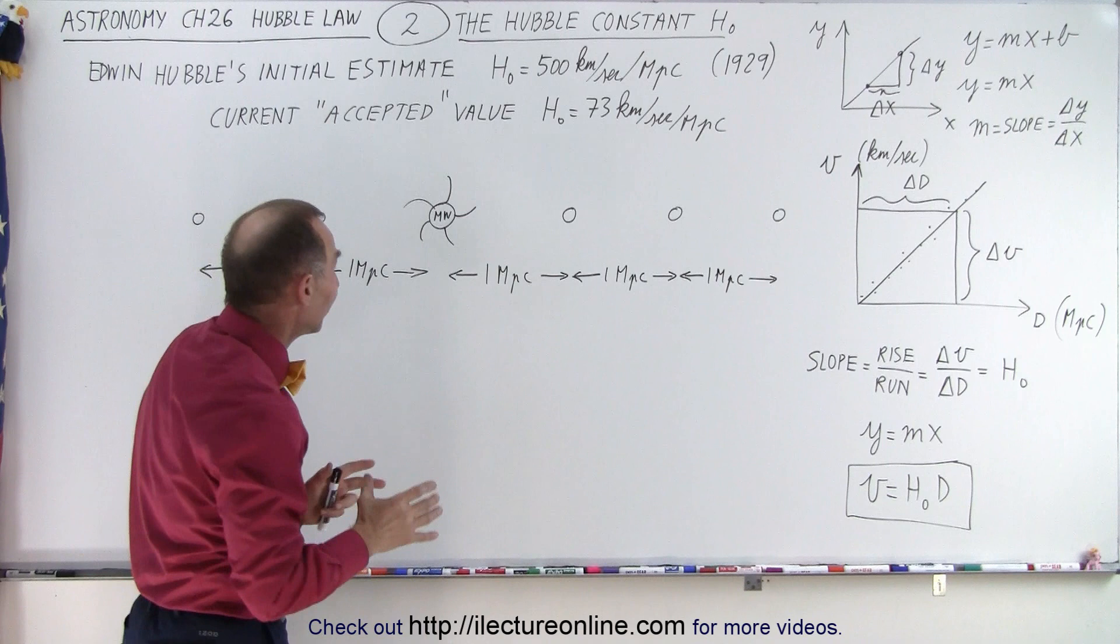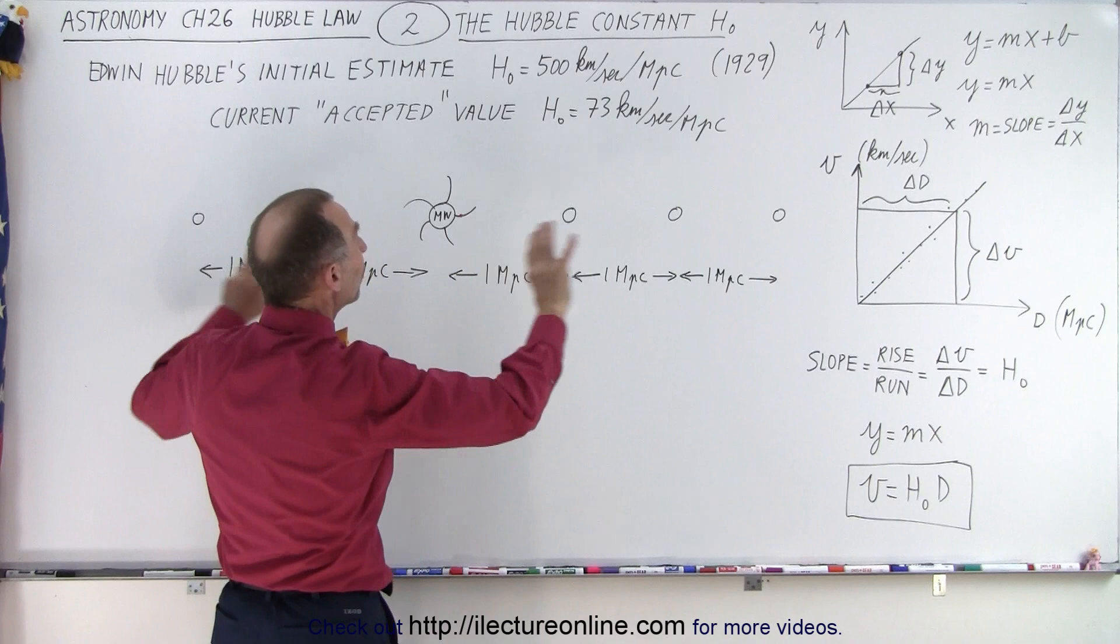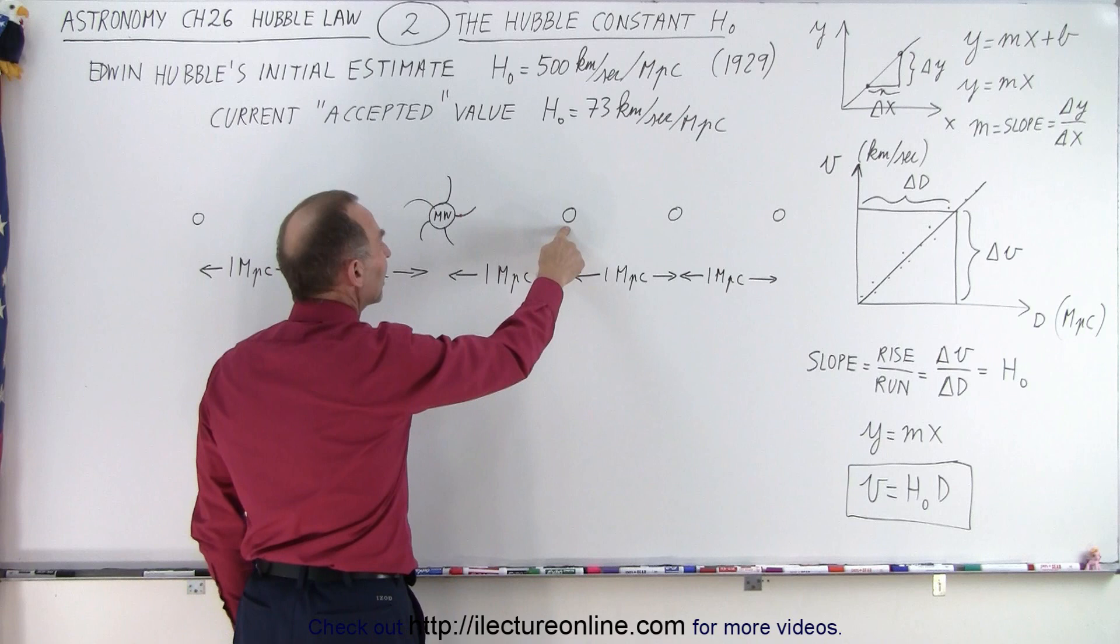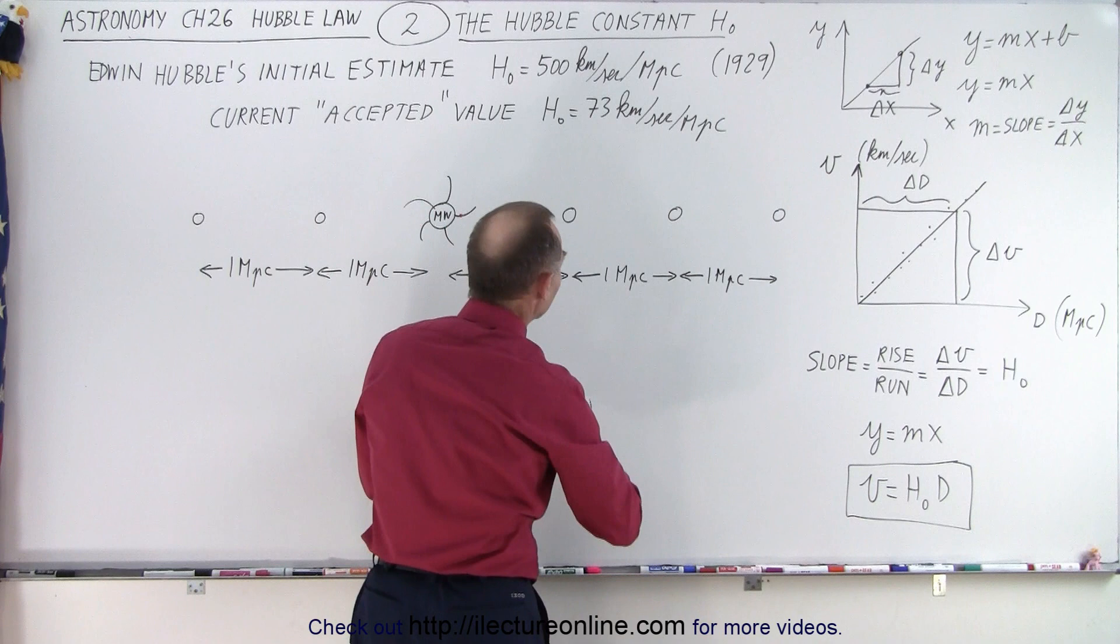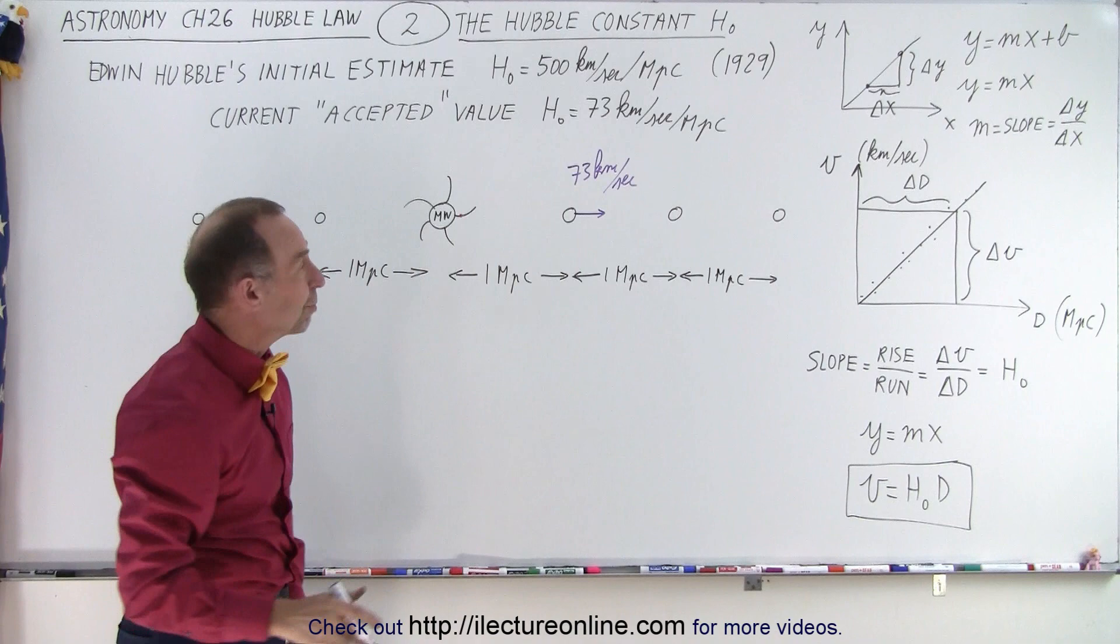But what does it mean? Well, let's say that we live here in the Milky Way galaxy and obviously our sun is somewhere on one of the spiral arms about 30,000 light years away from the center of the galaxy. And we look all around us, we see other galaxies that are moving away from us. So let's say there's a galaxy right here that is one megaparsec away. Based upon the Hubble law, we then know that the galaxy is moving away from us at about 73 kilometers per second. So for a galaxy that's one megaparsec away, it will be moving at that speed.